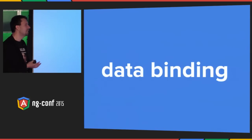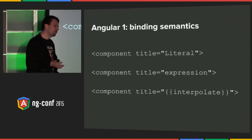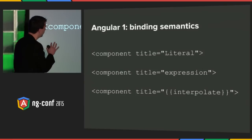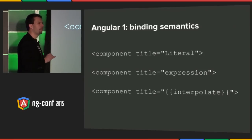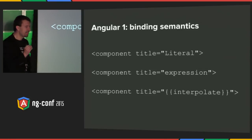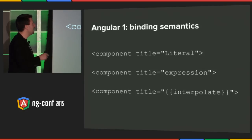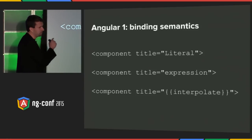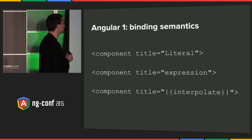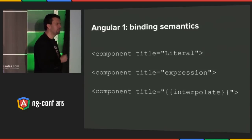The first thing we want to talk about is data binding — how do I get data from my model and project it to the UI? In Angular 1, when you declare a component, it turns out you could write three different kinds of components: title as a literal, as an expression, or as an interpolation if the component has set up proper listeners. This is not obvious when you first look at it, but the choice of which one of these three things happens lies with the author of the component, not with the author of the template. And it turns out that's backwards.